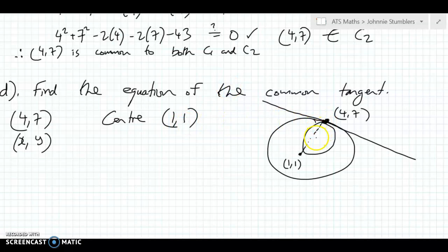So if we get the slope, m1, say, of the point between the points 1, 1 and 4, 7. So we can call that there x1, y1. And this one here x2, y2. And the slope, m, is going to be y2 minus y1 over x2 minus x1.